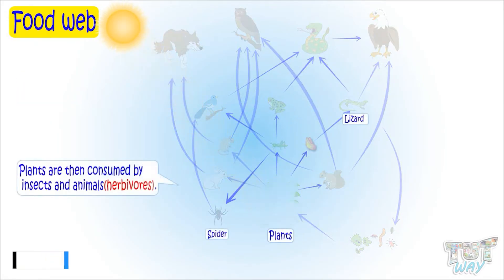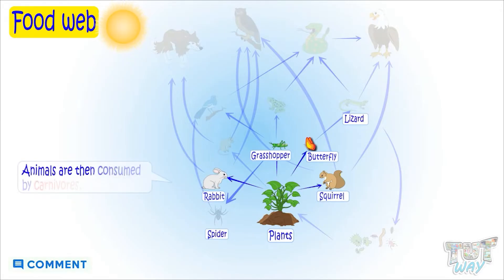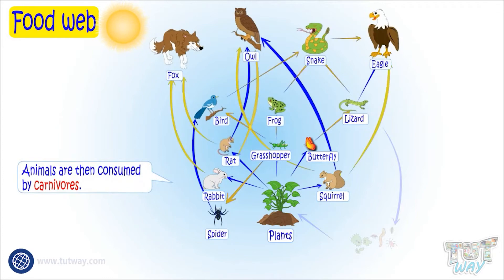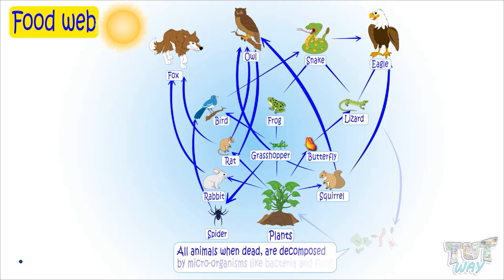Plants are then consumed by herbivore insects and animals. Animals are then consumed by carnivores, and all animals when dead are decomposed by microorganisms like bacteria and fungi into nutrients that are again used by plants to make food.